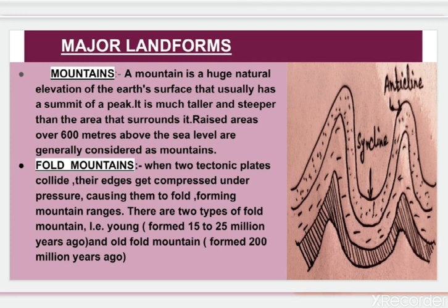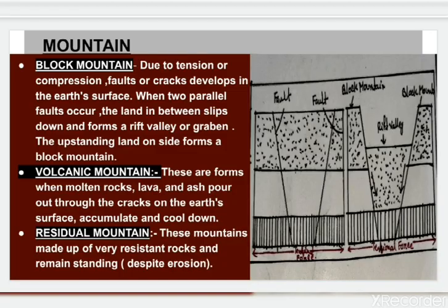These mountains are generally of four types. First, we will learn about fold mountains. When two tectonic plates collide, they each get compressed under pressure, causing them to fold, which forms these mountain ranges. There are two types: young fold mountain and old fold mountain. Young fold mountains formed 15 to 25 million years ago, whereas old fold mountains formed 200 million years ago.